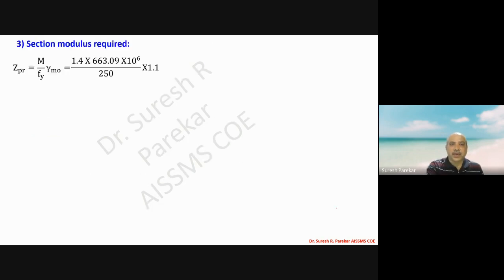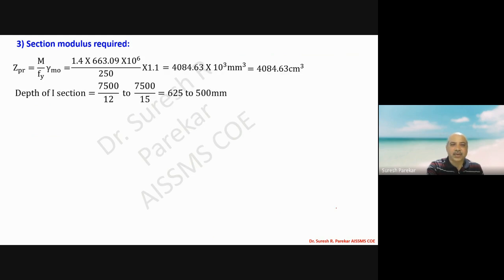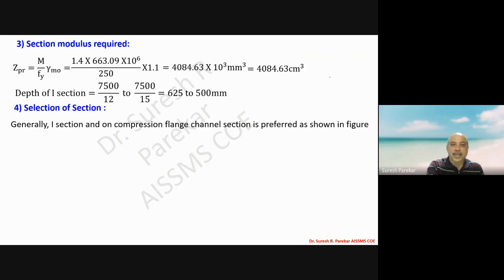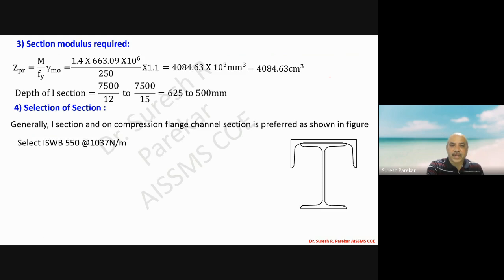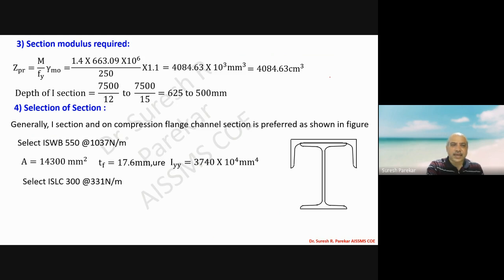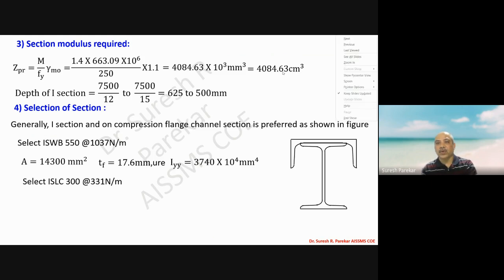Now for section modulus required: Zp required is calculated, and the most important parameter is the depth of the beam section. For selection of section, we try ISWB 550 at 1037 newton per meter with its given properties as the trial section, and ISLC 300 at 331 newton per meter. The required Izz value is 4084, but we need to understand the channel orientation.